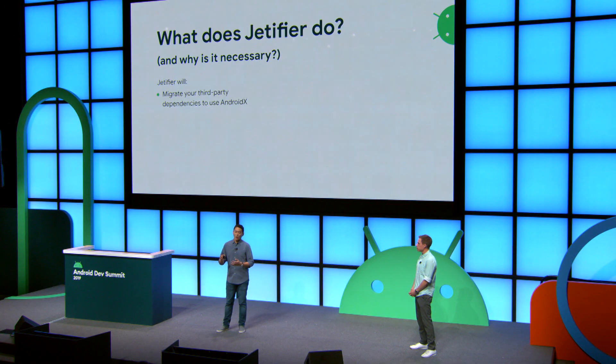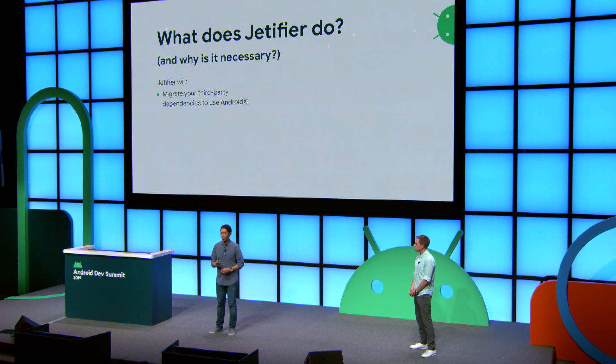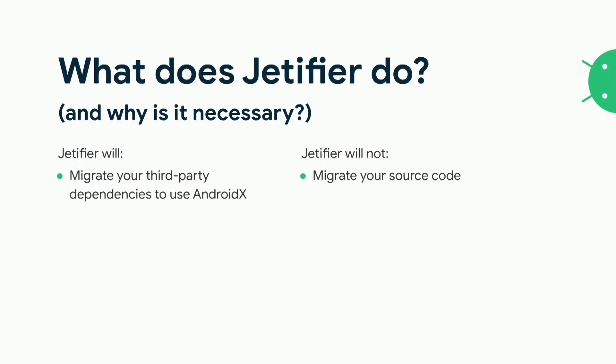Now that you've migrated to Support Library 28, we next want to enable Jettifier. Jettifier will help you migrate your third-party dependencies that use AndroidX — it will actually change the bytecode of those dependencies to be compatible with your project that's using AndroidX. Jettifier won't change your source code, nor will it migrate your generated code.